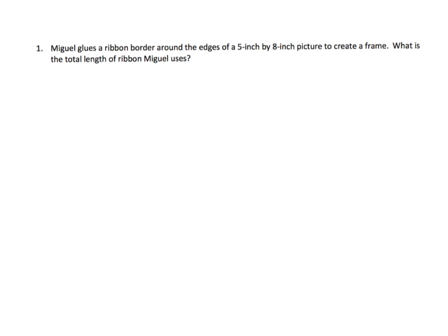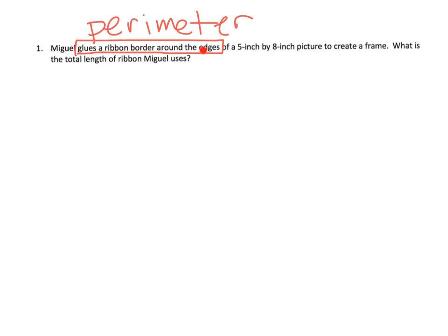Let's get started. It says Miguel glues a ribbon border around the edges — so that means we're talking perimeter. And then 'of a five-inch by eight-inch picture to create a frame' — so this means it's a rectangle.